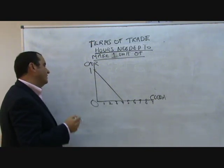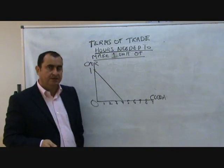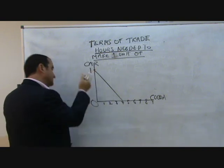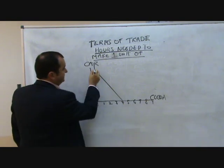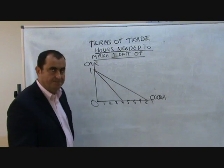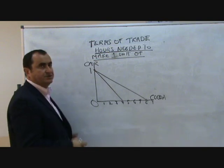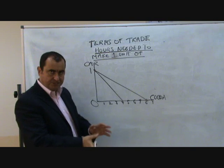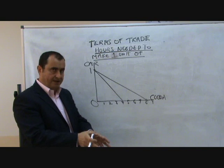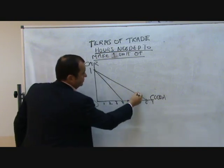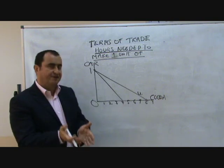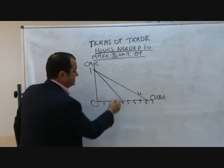Now in Uganda, where it takes 16 hours to make a car or two hours to make a unit of cocoa, for every car they make — which takes 16 hours — they could have made eight units of cocoa. So the opportunity cost ratio in Uganda is: shall we make a car or eight units of cocoa? This is the Uganda line. And in the UK, it was: shall we make a car or four units of cocoa beans? This is the UK line.